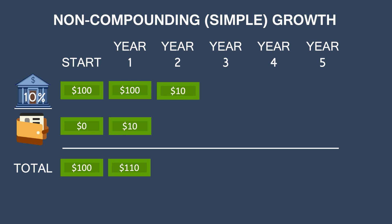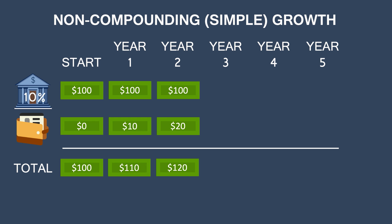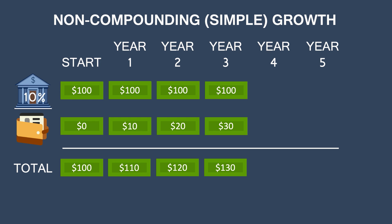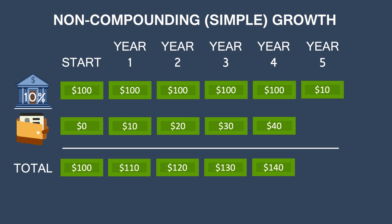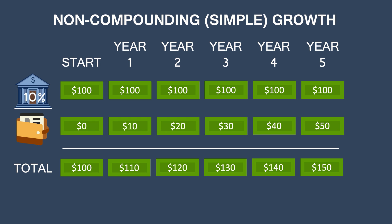This repeats: the bank gives you another $10 in the second year. You put it in your wallet — now you have $20 — still $100 in the bank, $120 total. After year three, you receive another $10, giving you $30 in your wallet and $130 total. After year four, another $10, giving you $40 and $140 total. In the final year, another $10 gives you $50 in your wallet and $150 total. The bank got to borrow $100 every year, paid you $10 each year, and you started with $100 and ended with $150. This is what we call simple interest, or non-compounding growth.